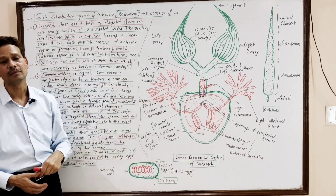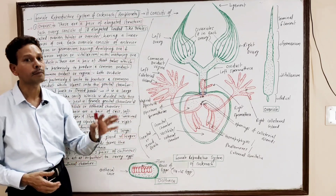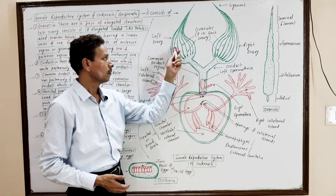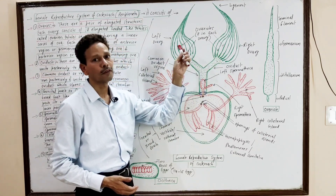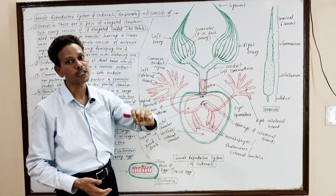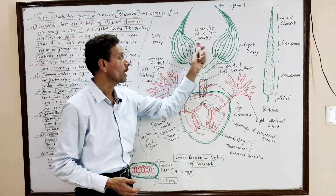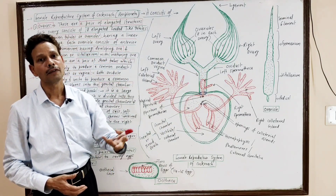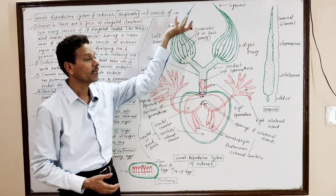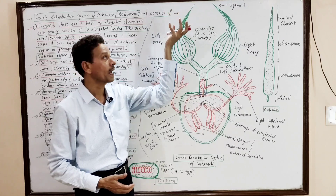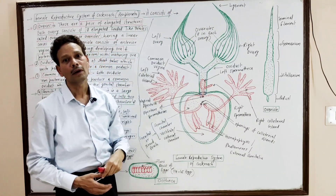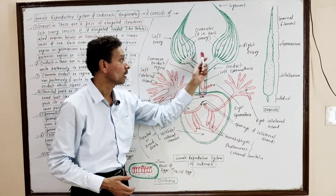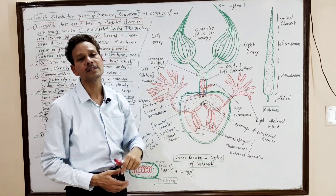In this system, the following parts are involved. First of all, the female reproductive system consists of a pair of ovaries. These are the female gonads — elongated structures. Anteriorly, these are narrow and tapering, and posteriorly, these are wide structures.